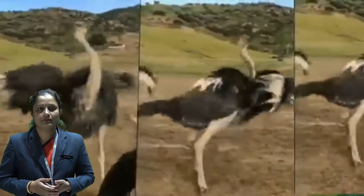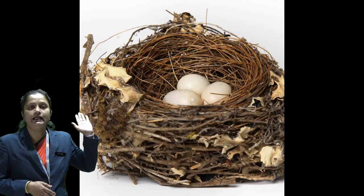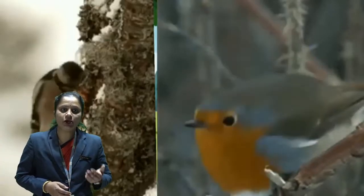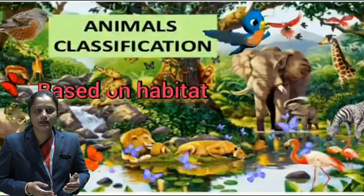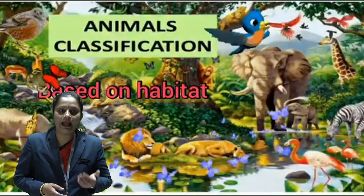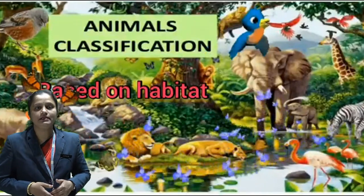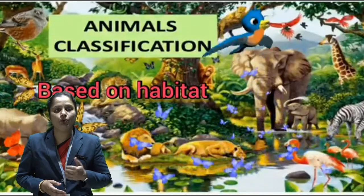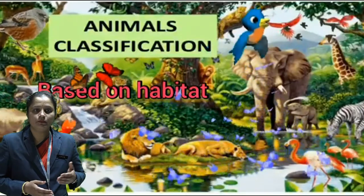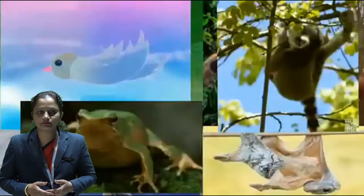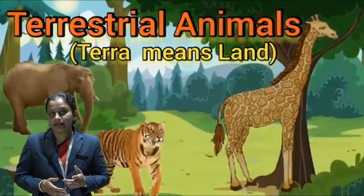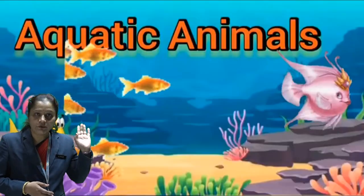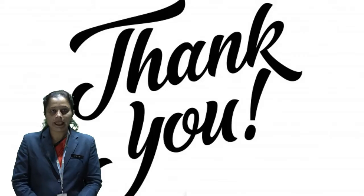Some of these aerial organisms will nest and live only on trees. Such organisms are called arboreal organisms. So let's summarize this lesson on habitat. A habitat is a natural home of an animal or a plant. It can also be called the surroundings where an organism lives. A habitat provides food, shelter and the best climate conditions for the organisms to thrive. There are mainly three types of habitats: terrestrial, aquatic and aerial. Thank you.